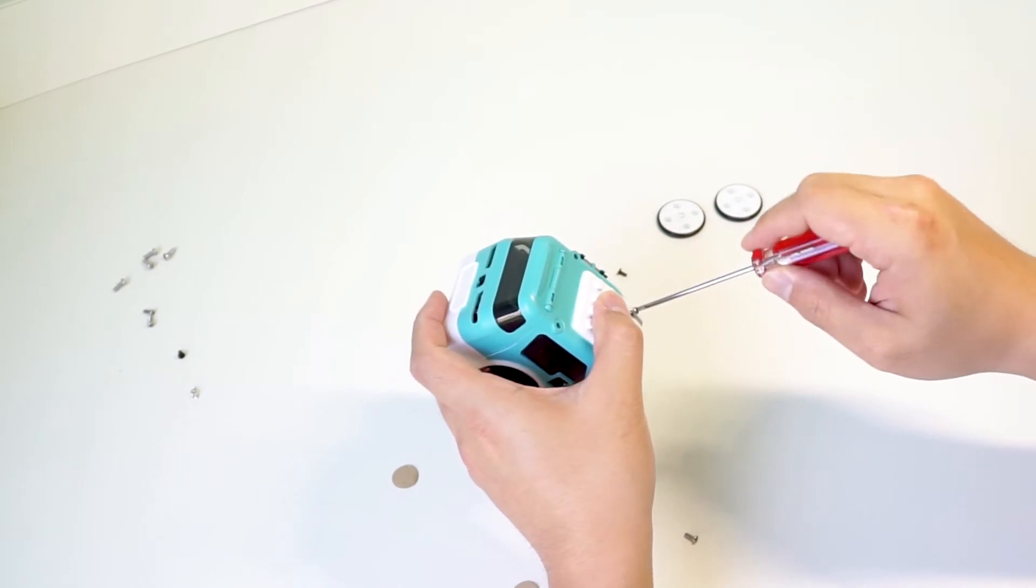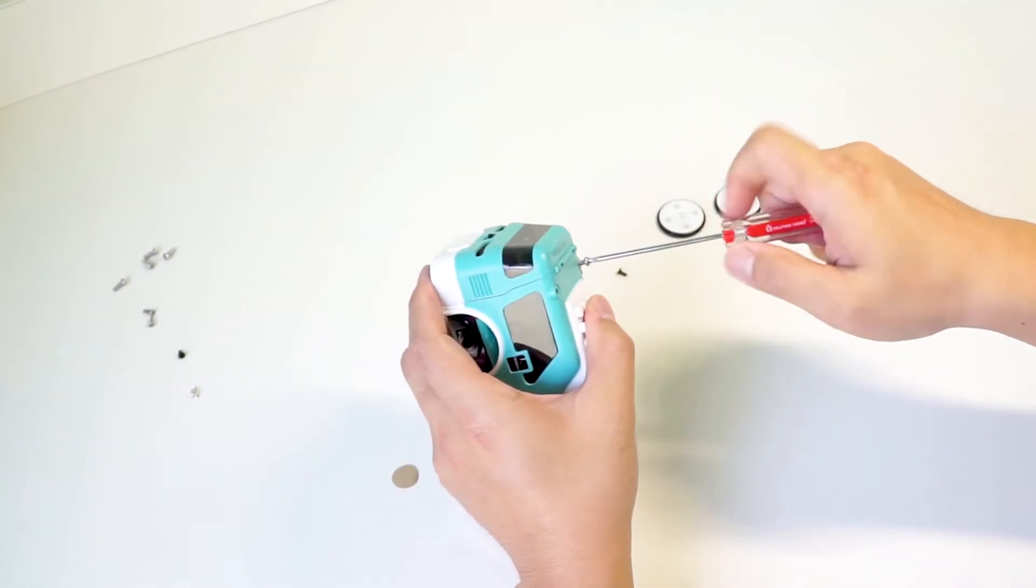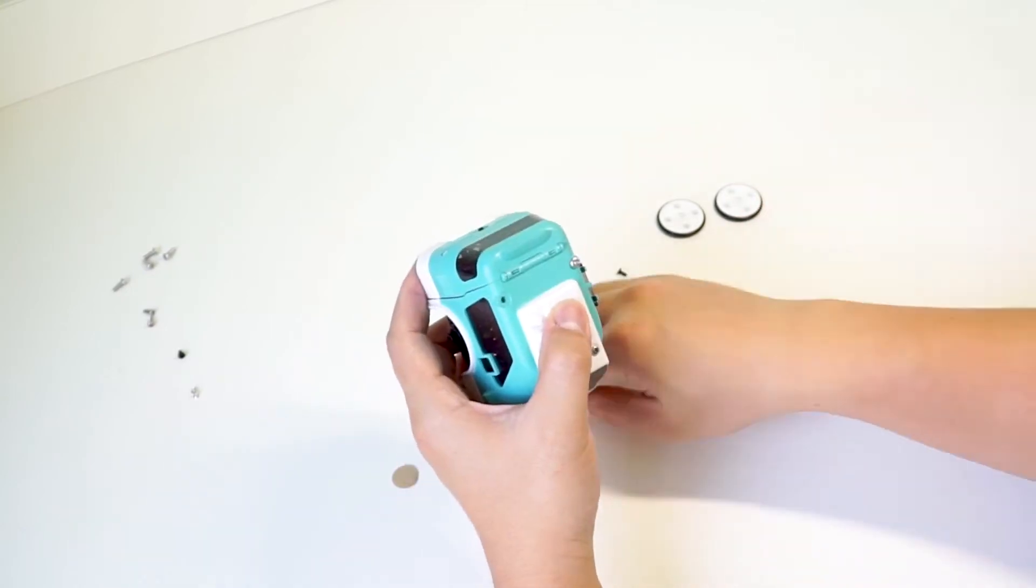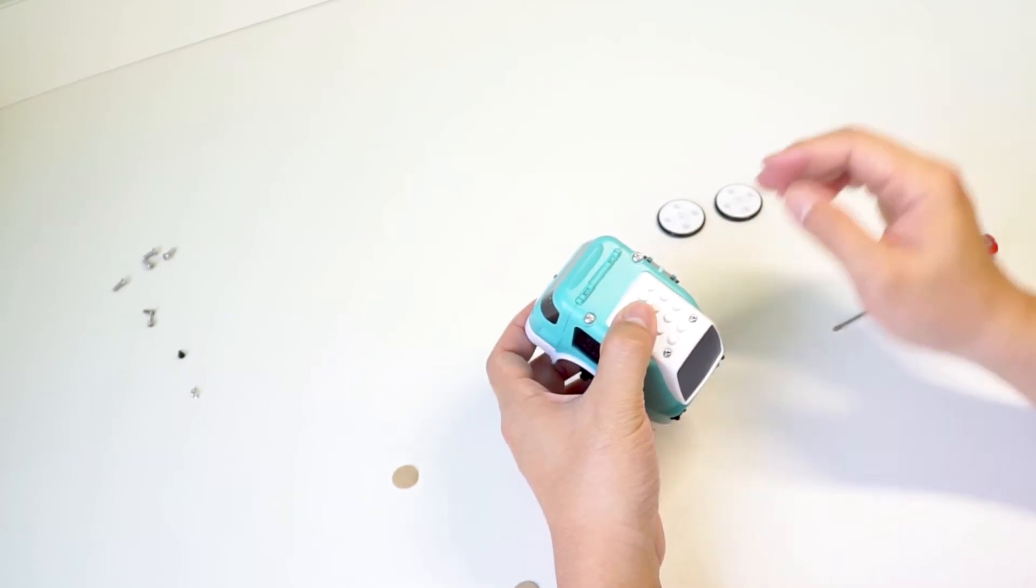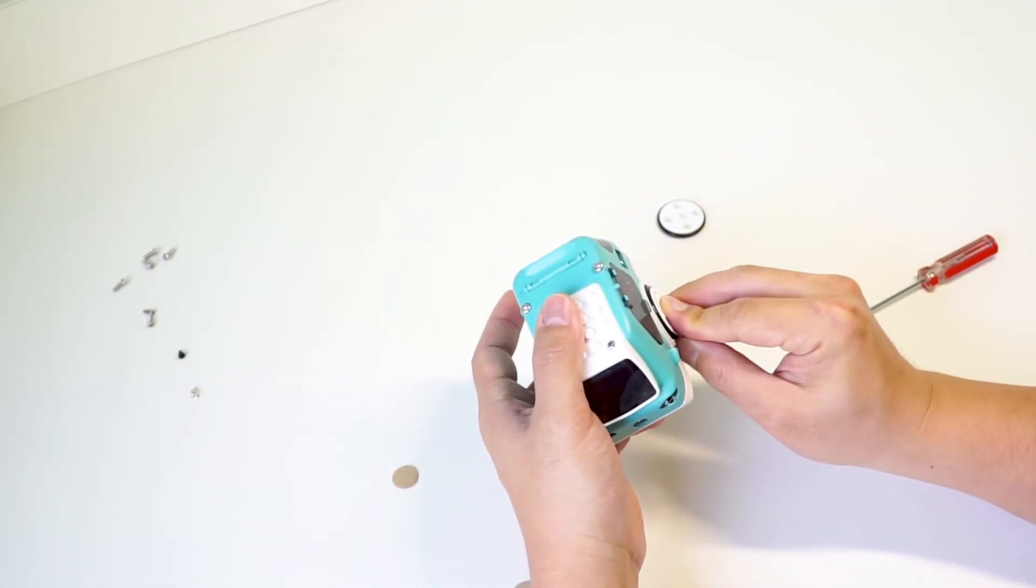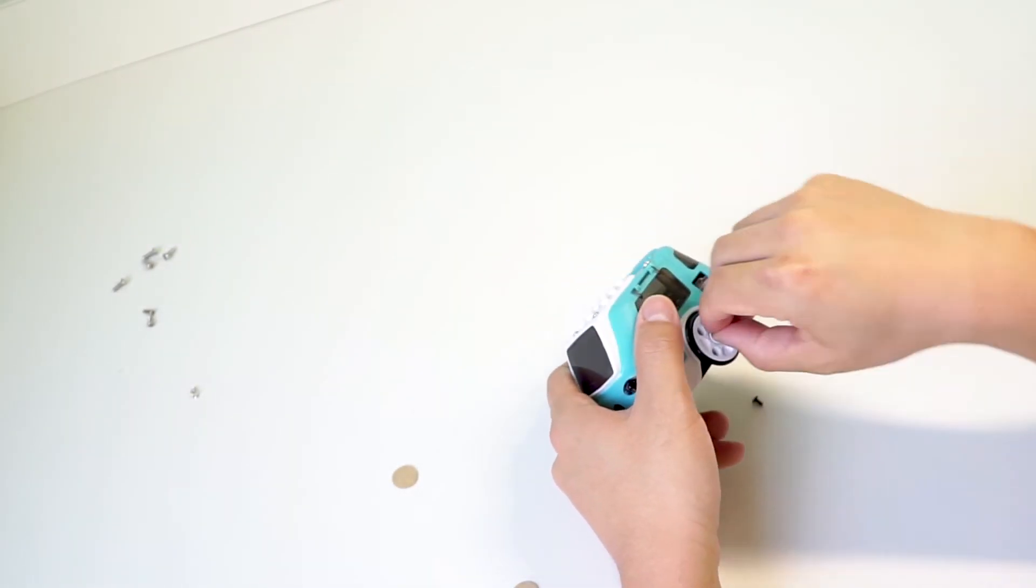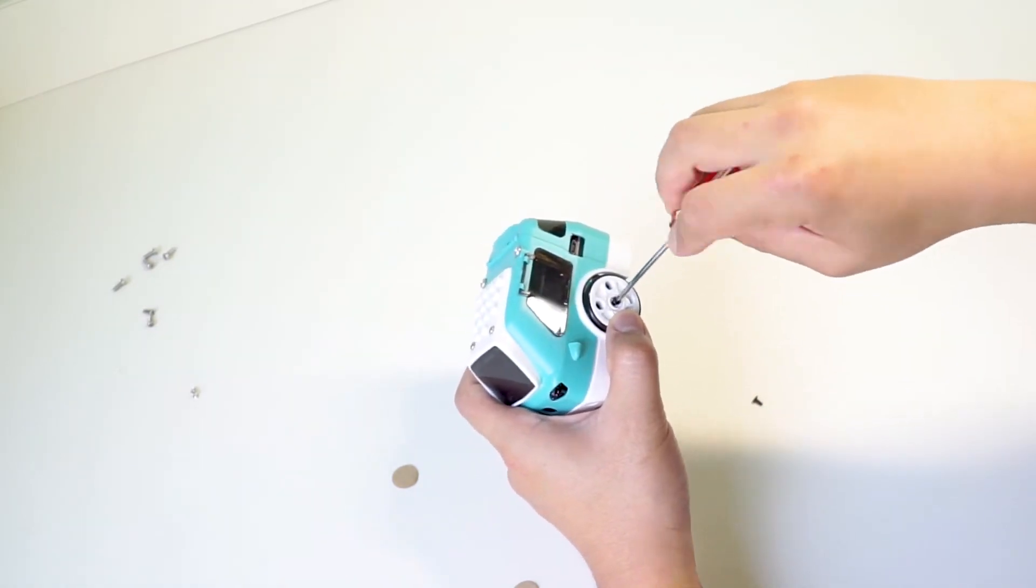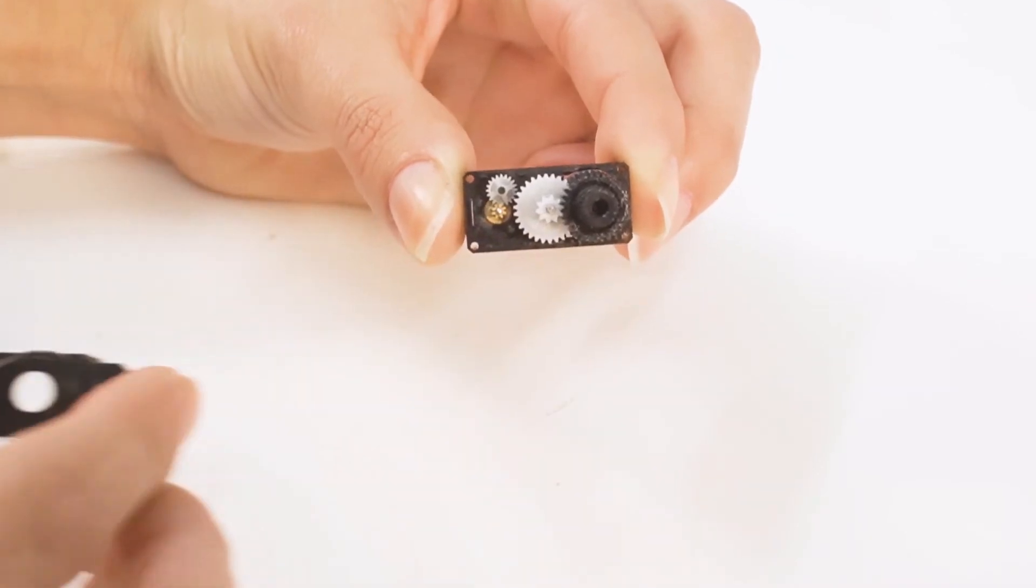If you're building Zumi for one of our virtual classes, you can skip ahead to connecting the battery. We'll attach the wheels during our first day of class. Otherwise, you'll attach the wheels on the motors and use the motor bolts to mount them securely. Make sure not to tighten or twist too hard, or you could damage the motors. Also, make sure not to roll the wheels around. This can damage the gears inside the motors.